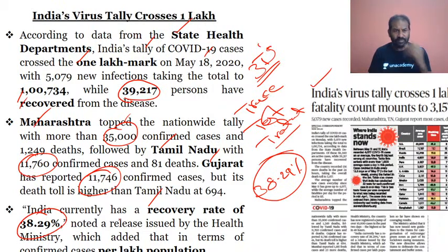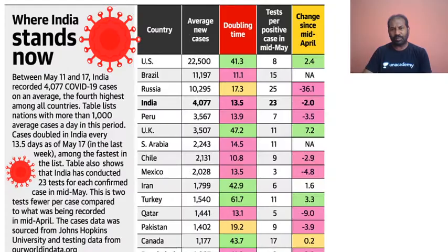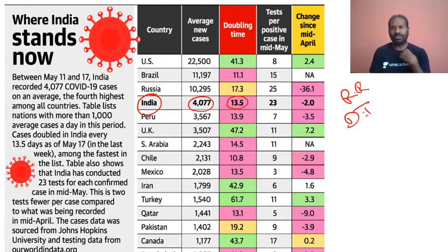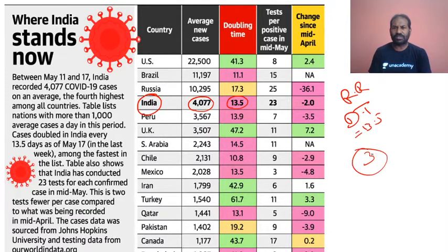The average new cases are 4,077 and the doubling time is 13.5 days. The doubling time is increasing, which is a good sign. During the first or second national lockdown it was three to four days, and now it has increased to 13.5 days. So we are trying to contain the virus, but we still need to go ahead more rigorously with testing and ensure that asymptomatic persons are not spreading the virus. India currently stands fourth globally.